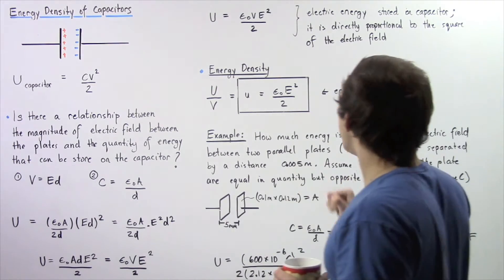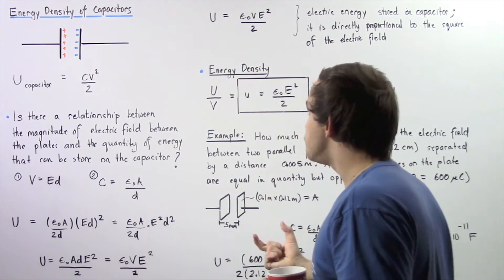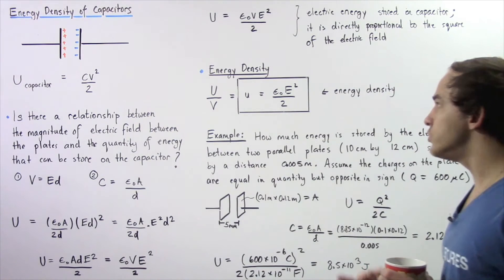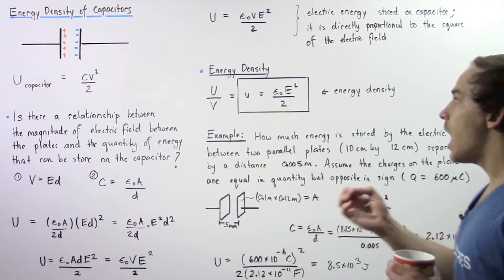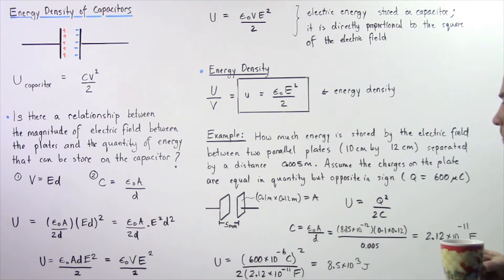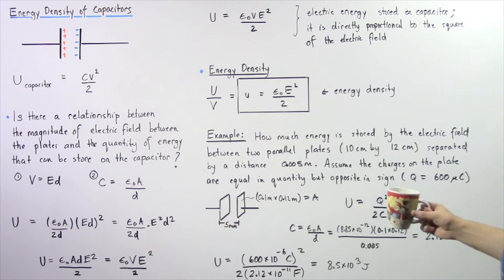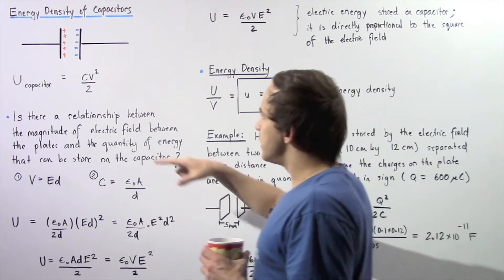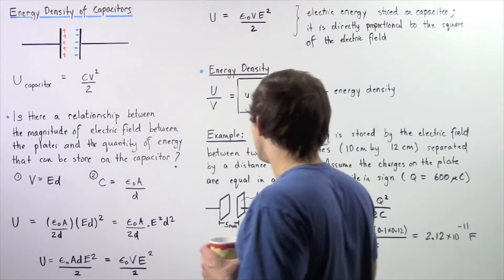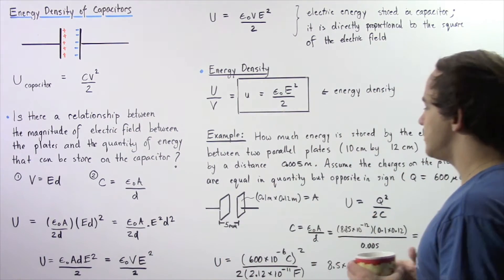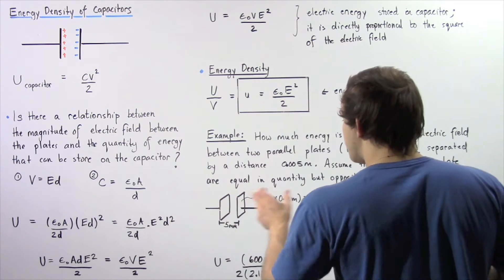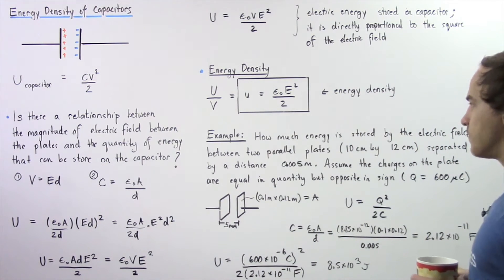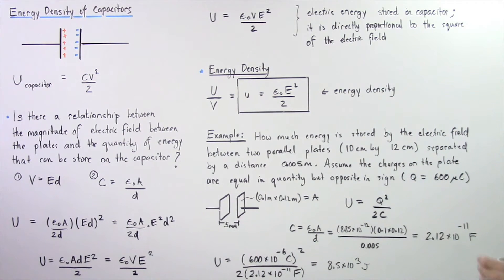Just like our electric energy, our energy density also depends on the square of our electric field. Now let's look at the following example in which we're going to use this equation to calculate the quantity of energy stored within our capacitor. How much energy is stored by the electric field between two parallel plates?